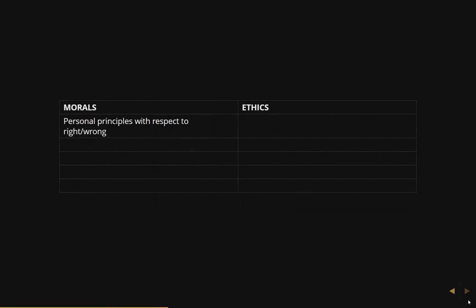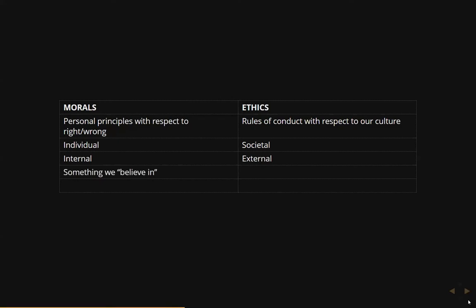We might be thinking about this as: are they defining the right and wrong actions? Actually, when we look at what right and wrong are, they fall under the category of morals. The differentiation between morals and ethics is that our morals are our personal principles of right and wrong, whereas ethics are rules of conduct with respect to our culture. When we think about our morals, they're individual — each one of us has our own beliefs about what's right and wrong — where ethics are more societally defined. Morals are internal to ourselves; ethics are external. Morals are more or less something we believe in, whereas ethics exist because society says so. And morals are transcendental, which can be very difficult to govern, which is why we have ethics, because we can govern them.